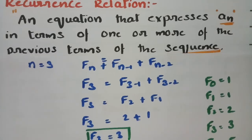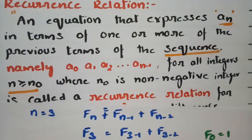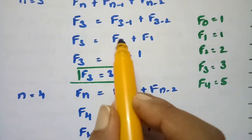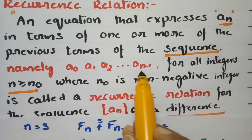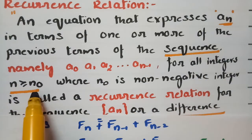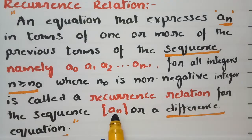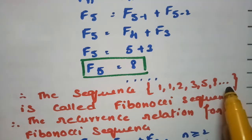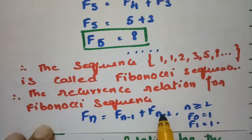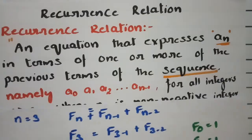Referring back to the definition: the equation expresses Aₙ in terms of one or more previous terms — A0, A1, A2, A3, ..., Aₙ₋₁ — for all integers n ≥ n0 where n0 is a non-negative integer. For example, F3 is expressed using the previous terms F1 and F2. The values obtained form the recurrence sequence, also known as the difference equation.